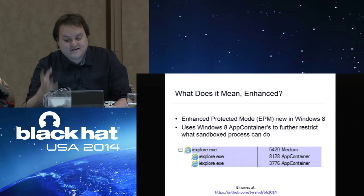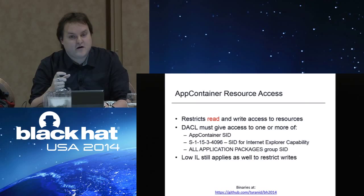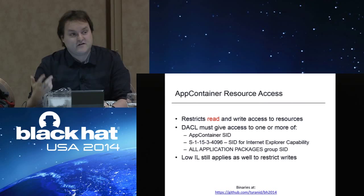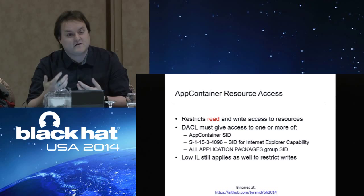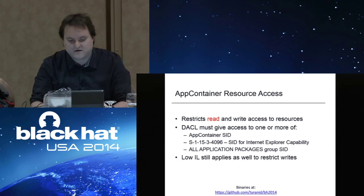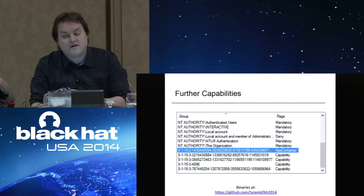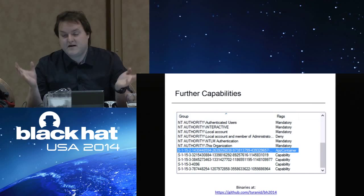Specifically in Enhanced Protected Mode, you need to give explicit permissions to both read and write to resources, done through the usual Windows access control mechanisms. IE has a special SID associated with the process, and you can add this SID to an access control list to give access to IE only. There's also the 'All Application Packages' group SID for group-based resource access. EPM goes even further — app containers have something called capabilities, which reflect what your application is allowed to do. For example, there's a capability for internet access; if that flag is not set, you simply can't get internet access.